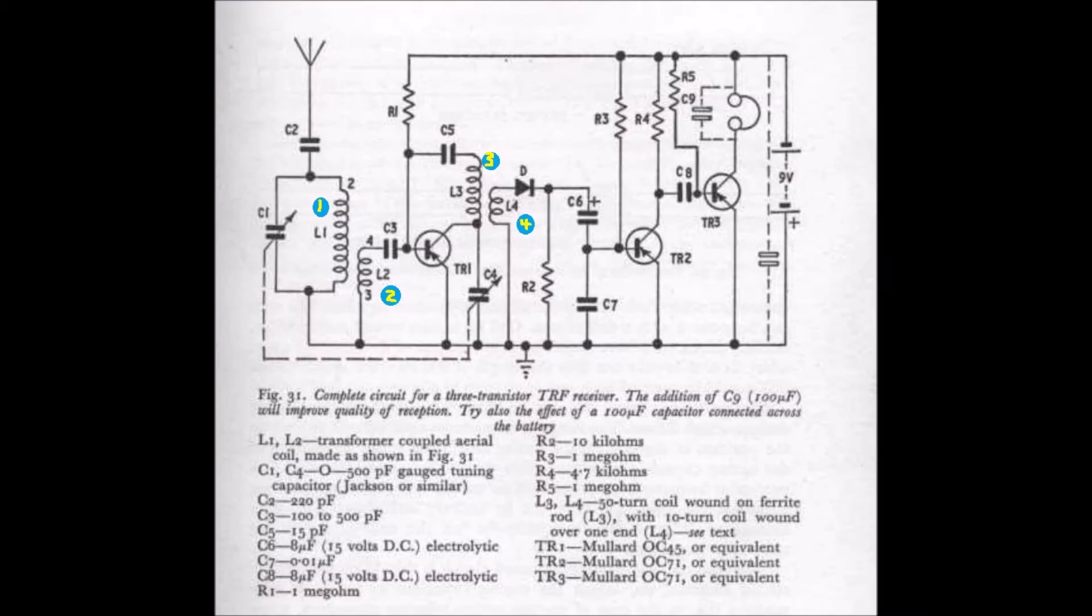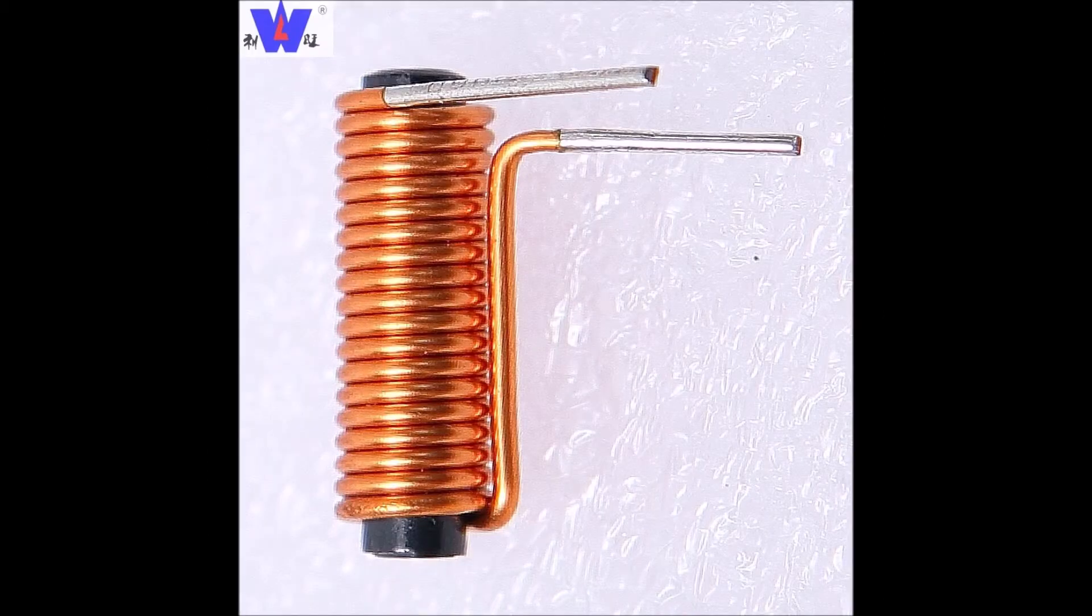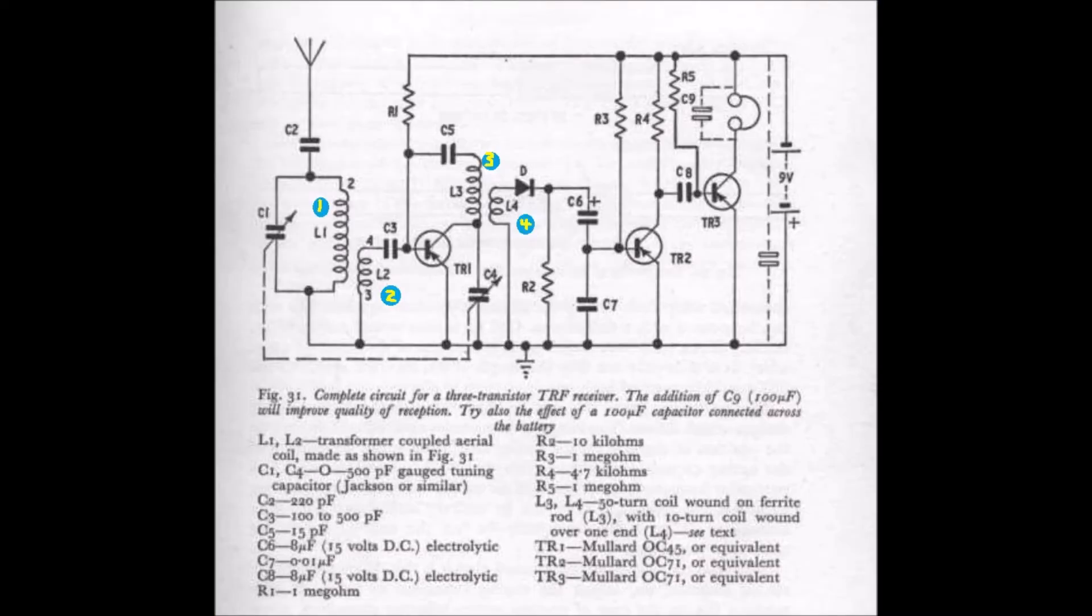Coil L3, L4 is made in very much the same way, except that the length of ferrite rod need only be about one inch. Also, the paper sleeve must be a sliding fit to enable the rod to be moved in and out to adjust the inductance of the coil if necessary. There is also one other difference.